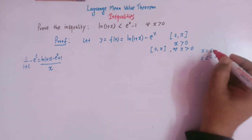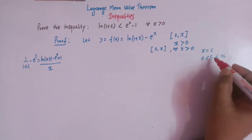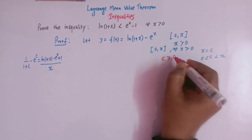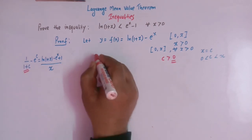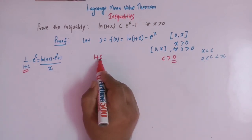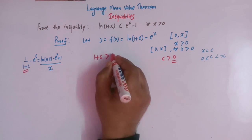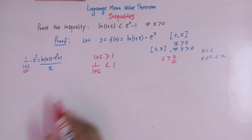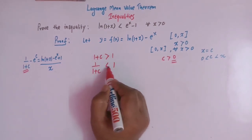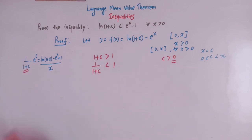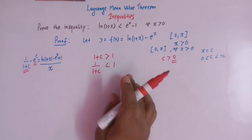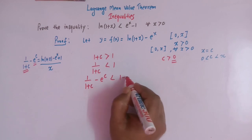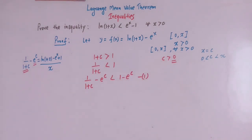Now the point c lies between 0 and x, and since x is a positive number, c is also a positive number. Since c > 0, when we add c to 1 then 1+c must be greater than 1. Taking the reciprocal of both sides, the direction of the inequality reverses, so 1/(1+c) is less than 1. Now we subtract e^c from both sides to get 1/(1+c) - e^c < 1 - e^c.